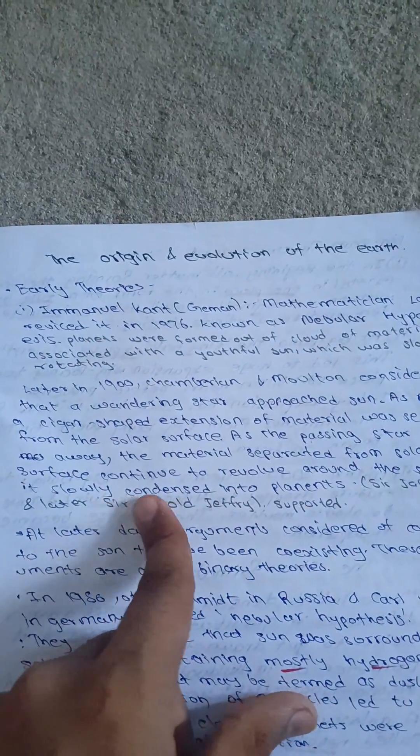At a later date, arguments considered the companion to the Sun to have been coexisting. These arguments are called binary theories. The above one was Nebular Hypothesis.